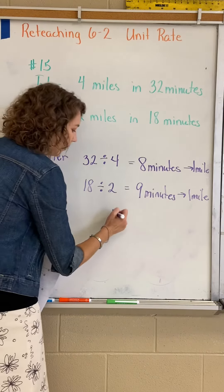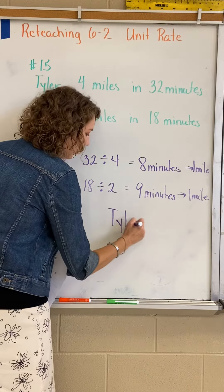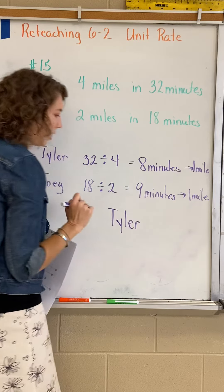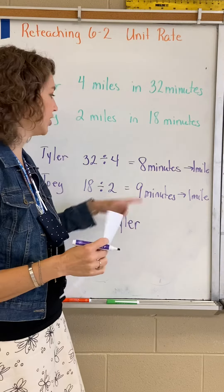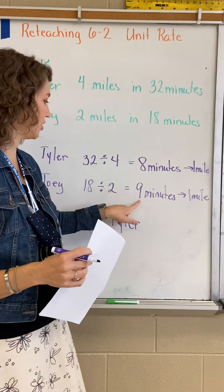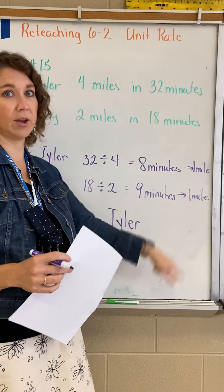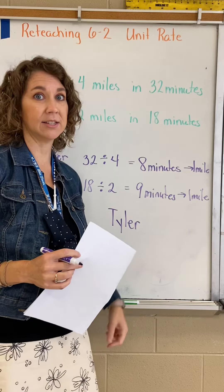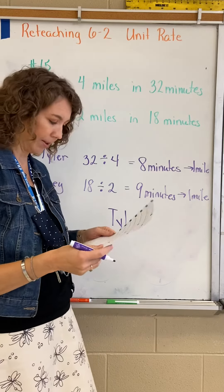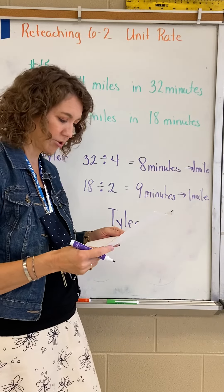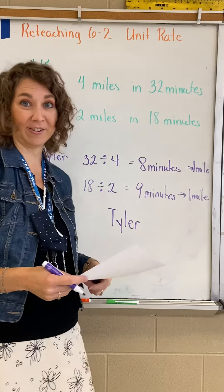Tyler. Tyler is running faster because he finished in eight minutes, and Joey still has another minute to run before he gets to the end. So the faster runner — who jogs the fastest? Tyler.